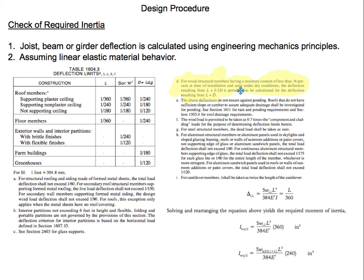For wooden structural members having a moisture content of less than 16% at time of installation and used under dry conditions, the deflection resulting from L plus 0.5D is permitted to be substituted for the deflection resulting from L plus D. So you can multiply the dead load by 0.5 if the moisture content is less than 16% at the time of installation or it will be used under dry conditions. Floor joists are usually used under dry conditions, so this can help.